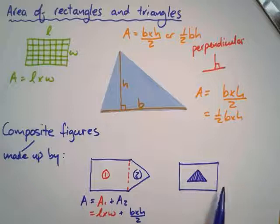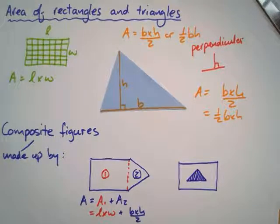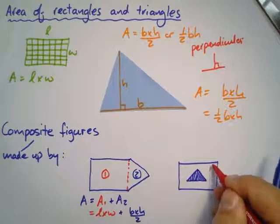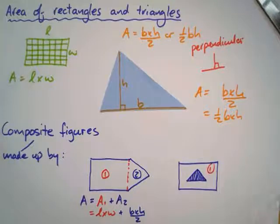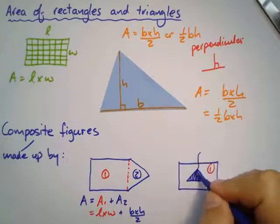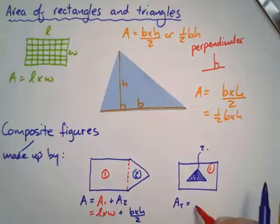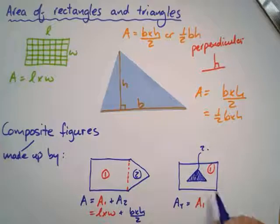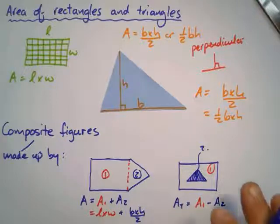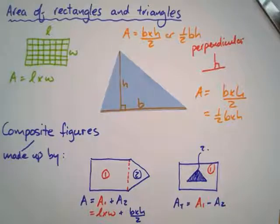So you can either add or you can subtract. So let's call this area one and we'll call this area two. So this will be the total area equals area one take away area two. As long as you know what you're doing and as long as you show your steps, it doesn't matter which way that you do it.